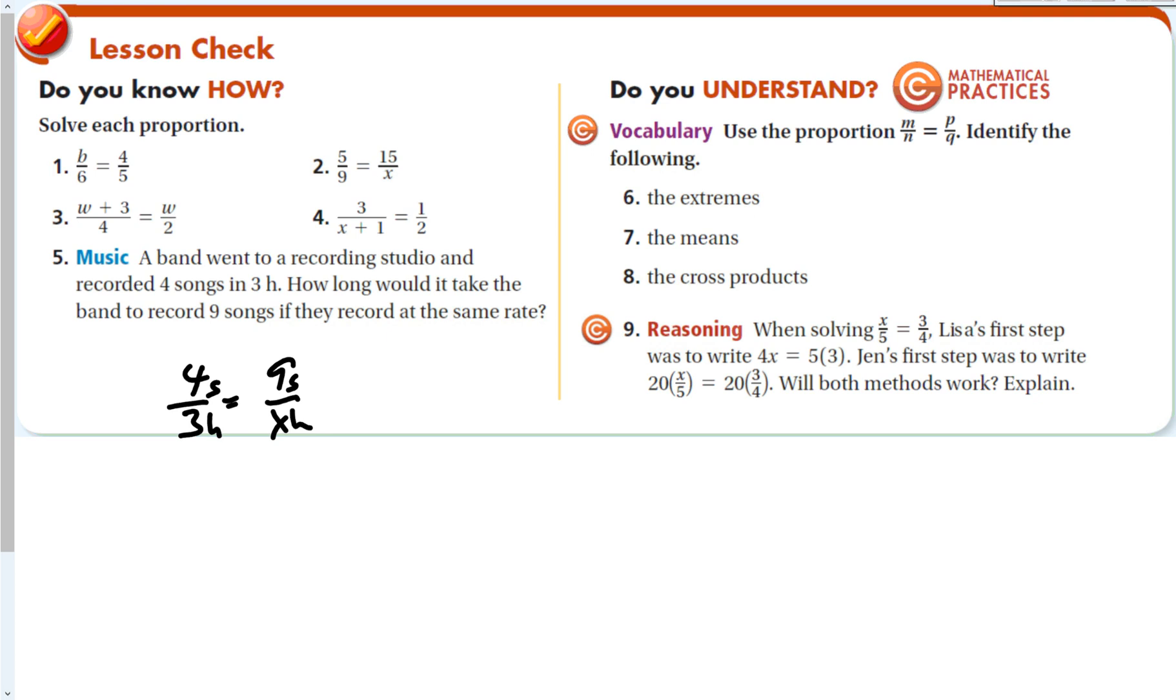Identify the following: the extremes. To find the extremes, we're always going to start at the top and cross down. So the extremes are M and Q. The means are P and N. And the cross products are both of them, so that's M times Q and P times N. When solving this equation, Lisa's first step was to write 4x equals 5 times 3. Jen's first step was to write 20 times x over 5 equals 20 times 3 over 4. Obviously, the first method's going to work because that's what we've been talking about. But will this method work? And the answer is actually yes, because it will clear both fractions. You multiply both sides by the common denominator to clear any fractions that you want. In this case, we're still going to be left with 4x is equal to 15, which is exactly what we have there.